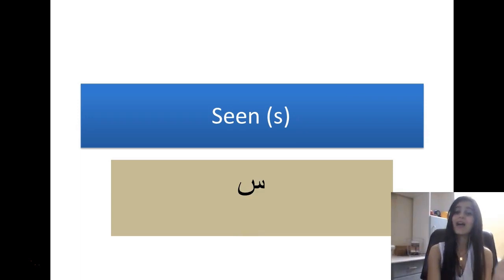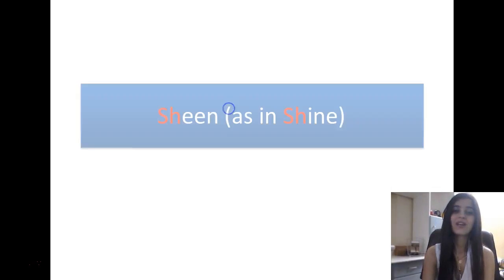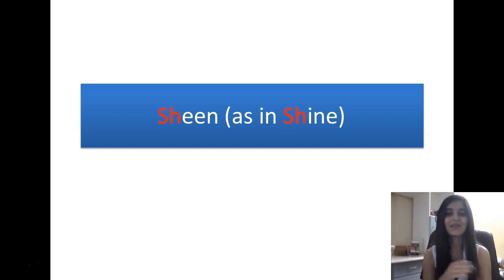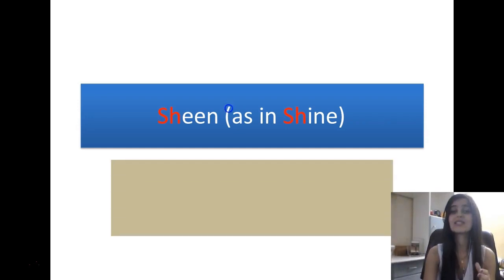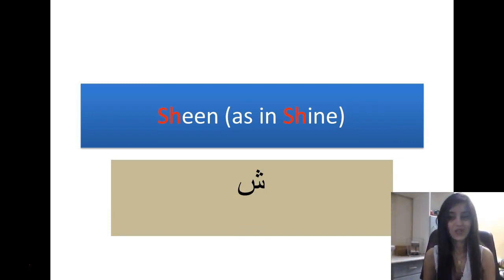Then we have a letter which is similar to SEEN in shape, which is SHEEN. This SH is just like in the word SHINE. So SHEEN is similar to SEEN in shape, but it has three dots above. The pronunciation is SH.